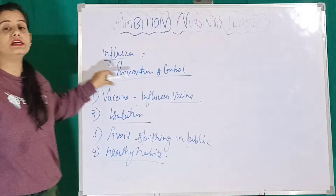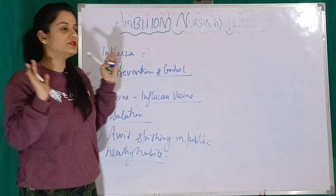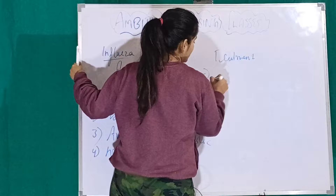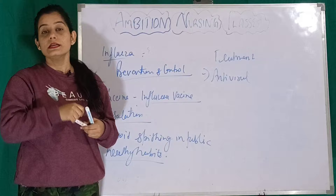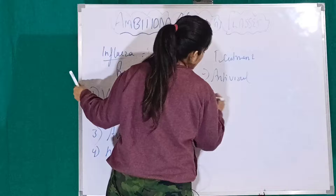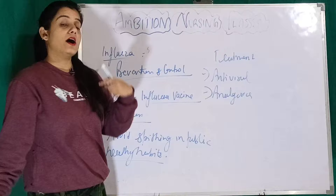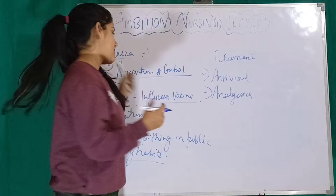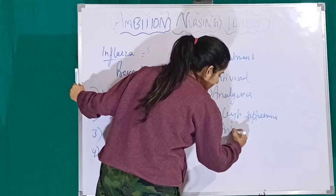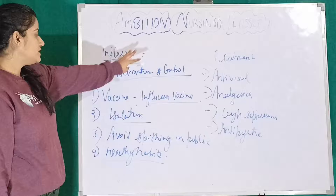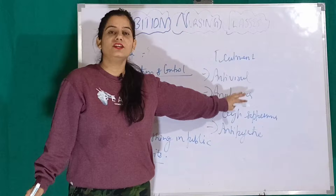Now coming to the treatment — pharmacological and non-pharmacological. First of all, we will give antiviral drugs, because this is a viral disease condition. Second, we can give analgesics, because as I mentioned in the signs and symptoms, fever can also cause pain. Third, if there is excessive coughing, we will give cough suppressants. And we can also give antipyretics, which reduce the fever.